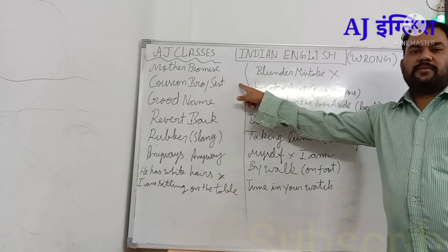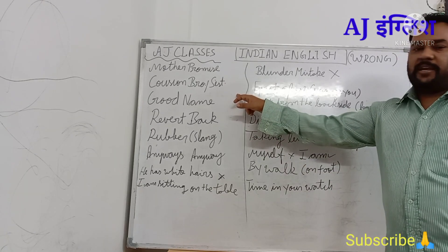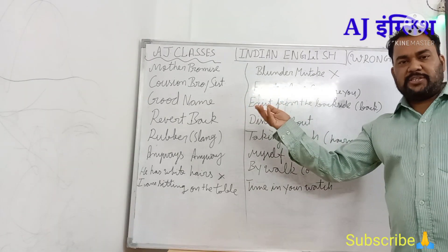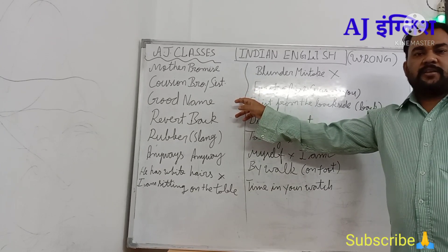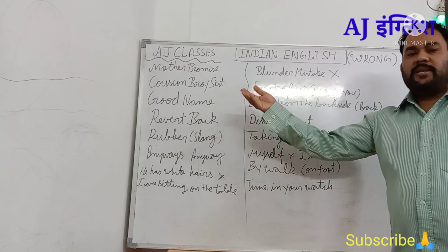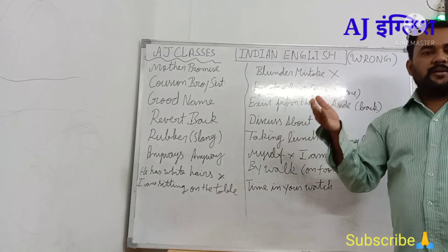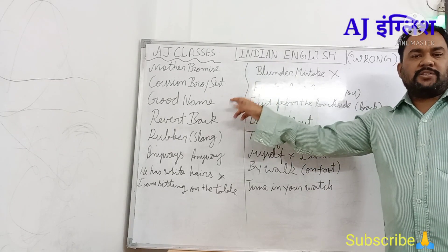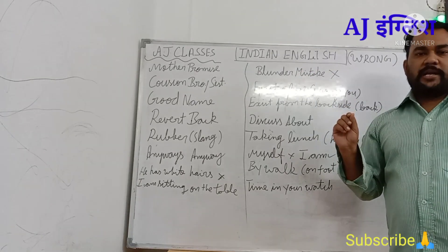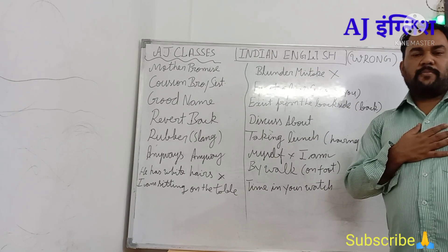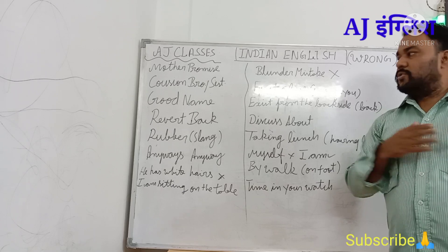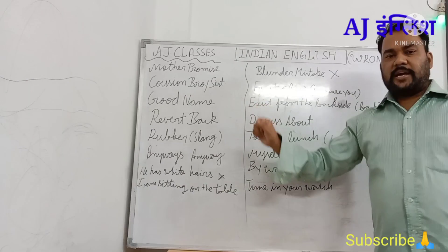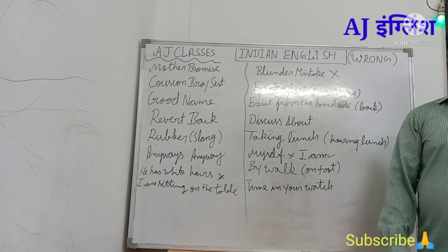We often say 'meet my cousin brother Rahul' or 'she is my cousin sister Shilpa.' That is wrong. Once you say 'cousin,' there is no need to add 'brother' or 'sister.' Simply say 'meet my cousin Rahul' or 'she is my cousin Tina.' It is already understood that a cousin refers to our relative from an uncle or aunt.